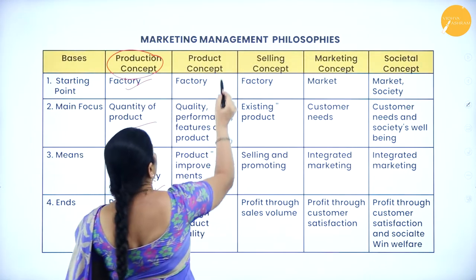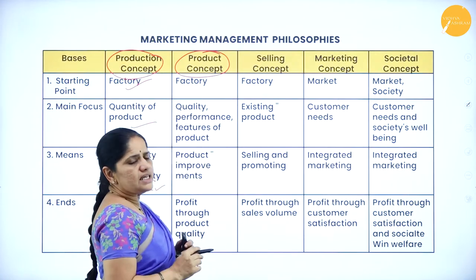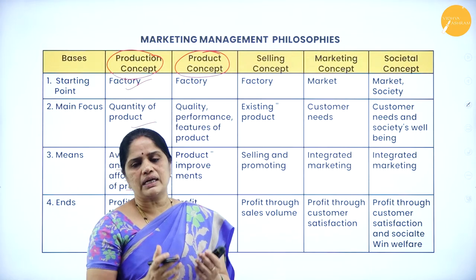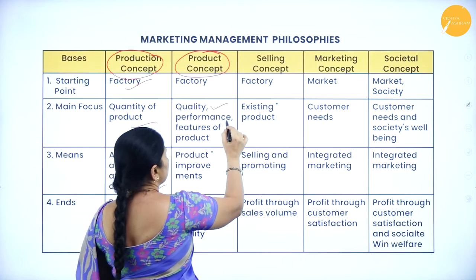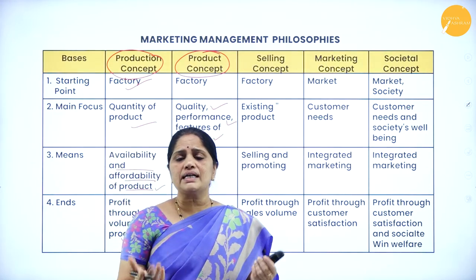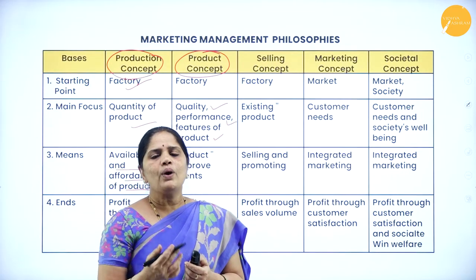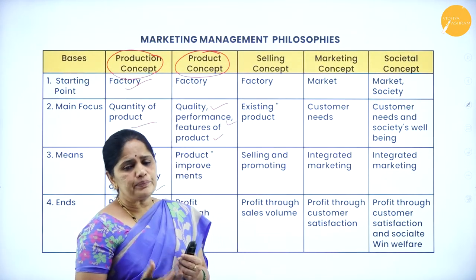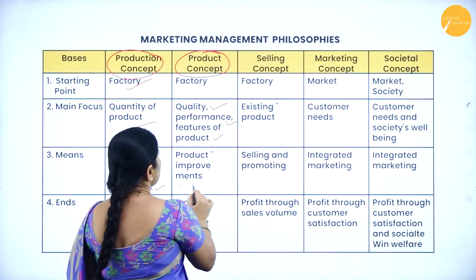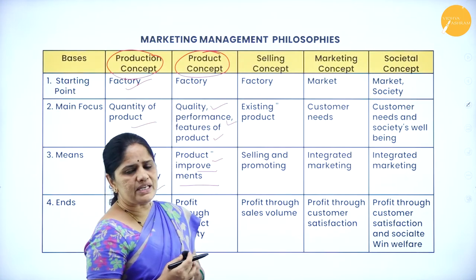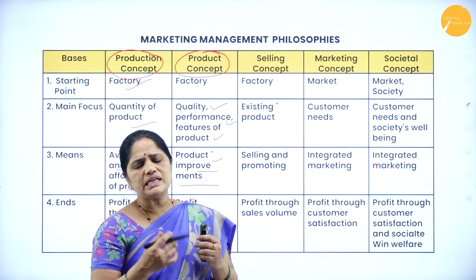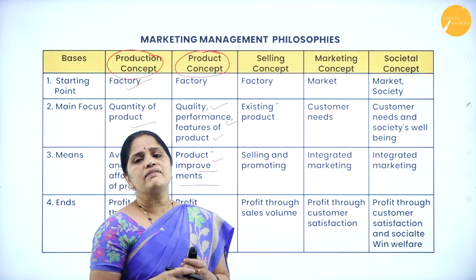The second concept is the product concept, where the product becomes the main focus. Here, quality, performance, and features of the product become very important. This product concept relates to consumer durables which are a one-time purchase — before making that purchase, the customer looks into the quality, performance, and features. The product concept is based on product improvements, and the manufacturer's profit comes through the quality being offered.